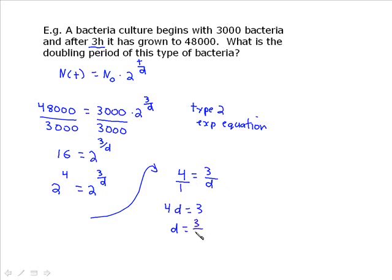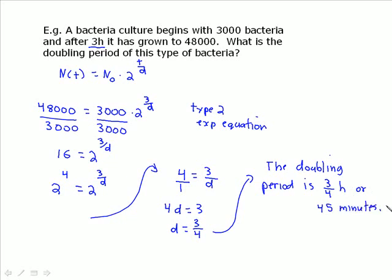So d equals 3 over 4. And I will put a statement at the end of this so we can just compare and see if it seems reasonable. The doubling period is 3 quarters of an hour or 45 minutes if we wanted to put it in that form. From the previous question, we know that 3 quarters of an hour is 45 minutes. We could also work that out by multiplying by 60. So be aware if the unknown is not where it's supposed to be, you might have to do something different algebraically to find it.